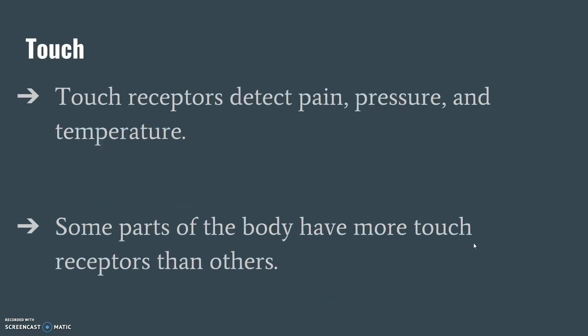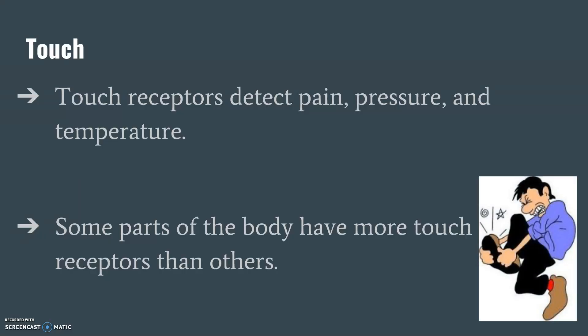And last, we have the sense of touch. Touch receptors help us to detect pain, pressure, and temperature, as I stated earlier. There are also some parts of our body that have more touch receptors than others because they might be more important for us to feel. For instance, if you have ever stubbed your toe accidentally, it definitely hurts a whole bunch. That's because our body wants to make sure our feet are sensing everything they possibly can — it was very important for early humans and still is today. We have a lot of nerve endings in our feet and toes, so whenever you hit them, it hurts more there than in other places.